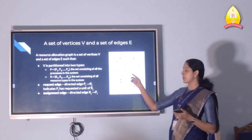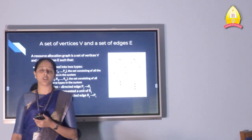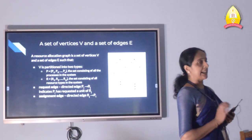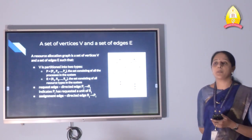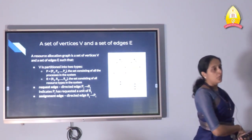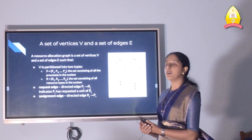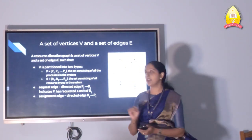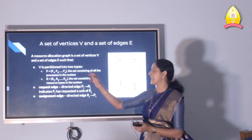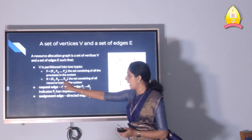Next, we can see the resource allocation graph. Deadlock can be described with the help of a resource allocation graph. It is a tool for recognizing deadlocks, very similar to normal graphs. This graph consists of a set of vertices V and a set of edges E. Vertices V consists of processes and resource types, partitioned into two types of nodes: P = {P1, P2, ..., Pn}, the set of all processes, and R = {R1, R2, ..., Rm}, the set of all resource types in the system.